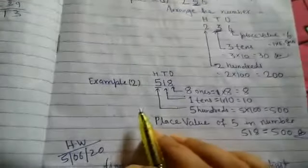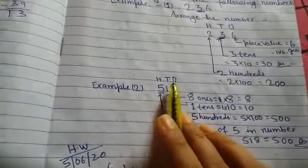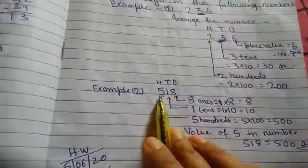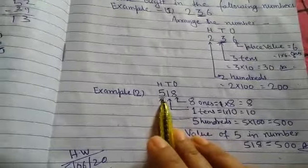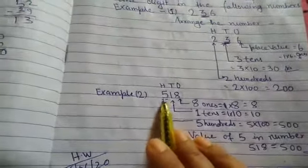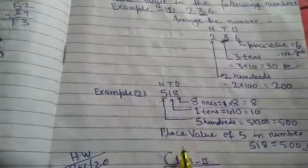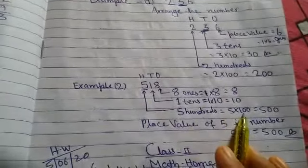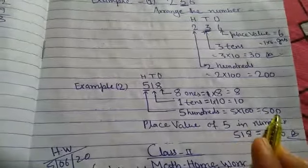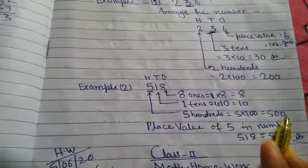In example 518, arrange the numbers in ones, tens, hundreds columns. To find 5's place value, 5 is in the hundreds column, so five hundred. Five hundred means 5 multiply by hundred is equal to 500. The answer is 500.